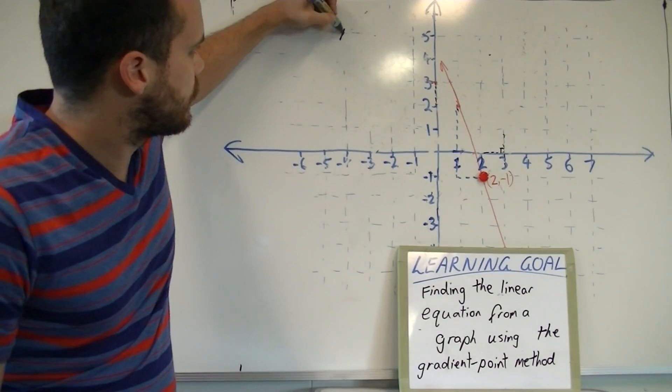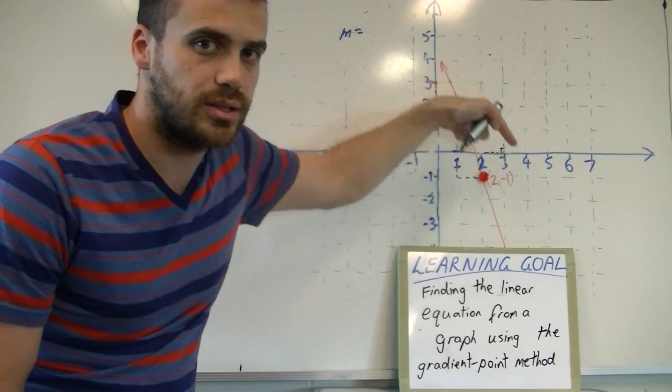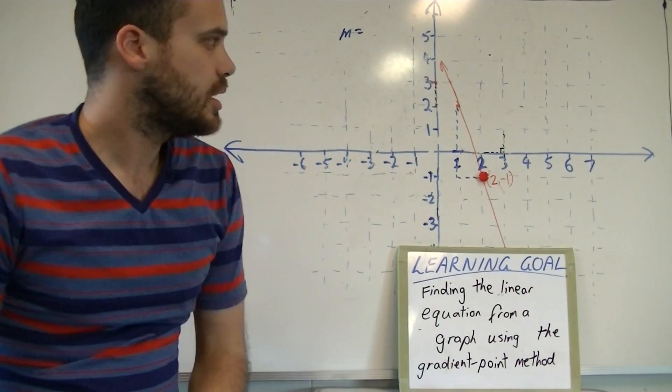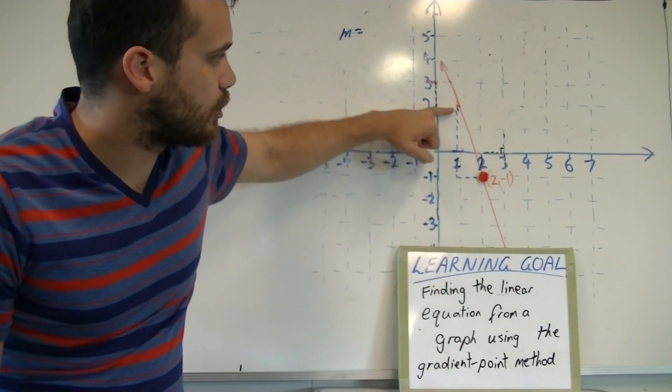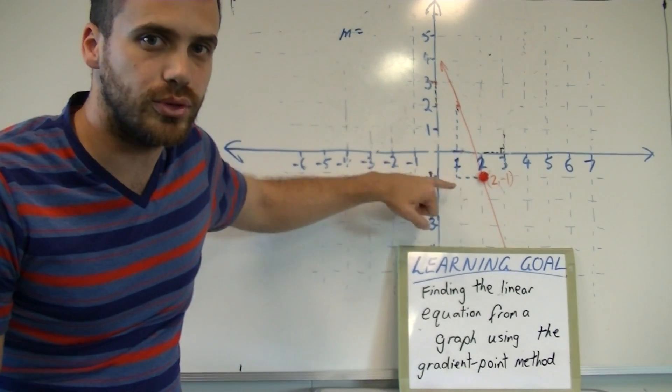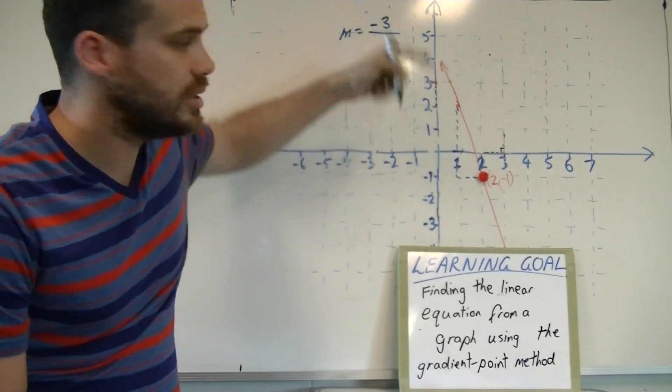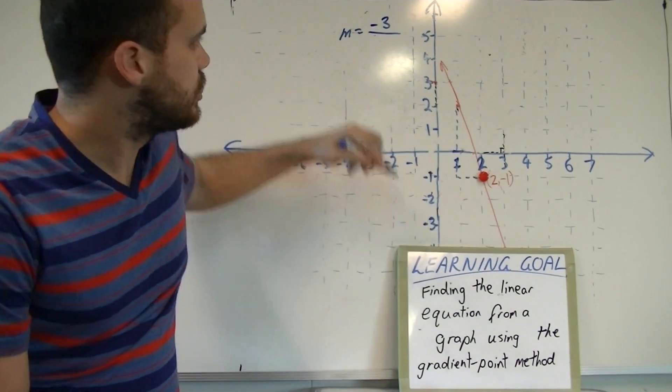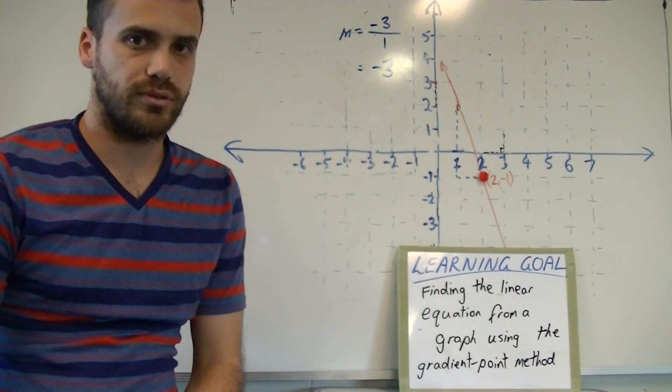You can see that this line is going diagonally downwards. That means it's going to have a negative gradient. You can see that our rise isn't a rise, it's a fall. So the rise is going to be negative 3 and the run is going to be 1. That means that our gradient is just negative 3.